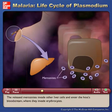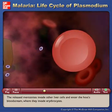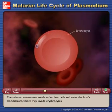The released merozoites invade other liver cells and enter the host's bloodstream, where they invade erythrocytes.